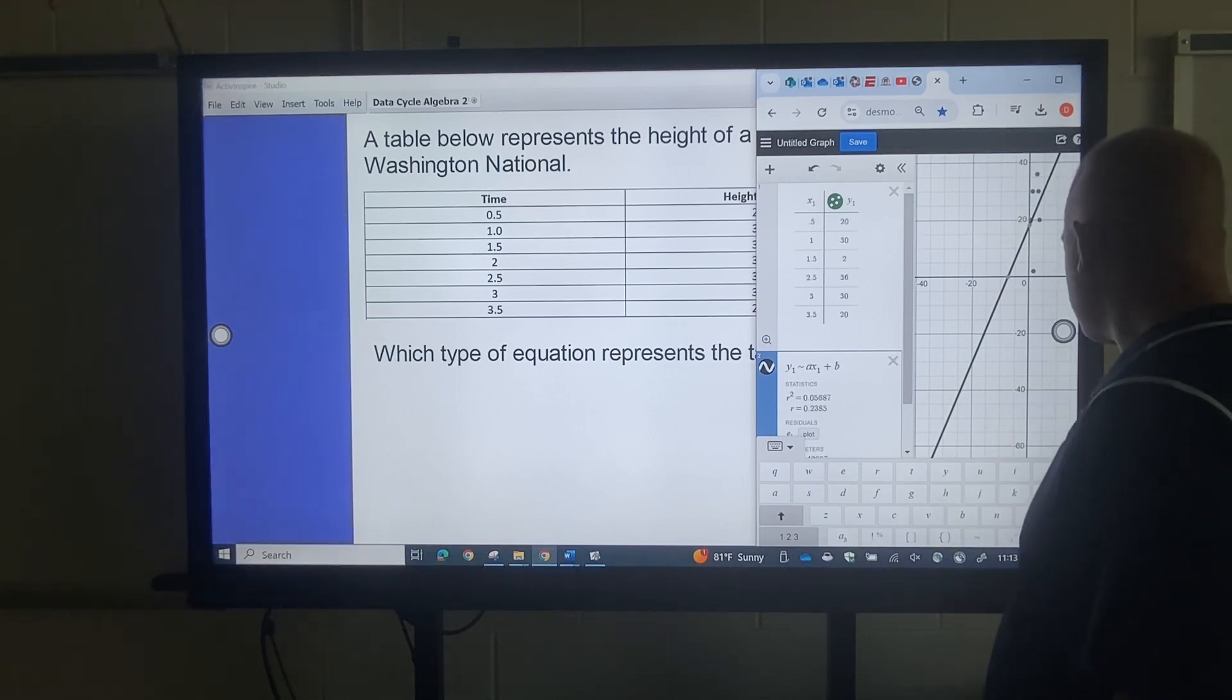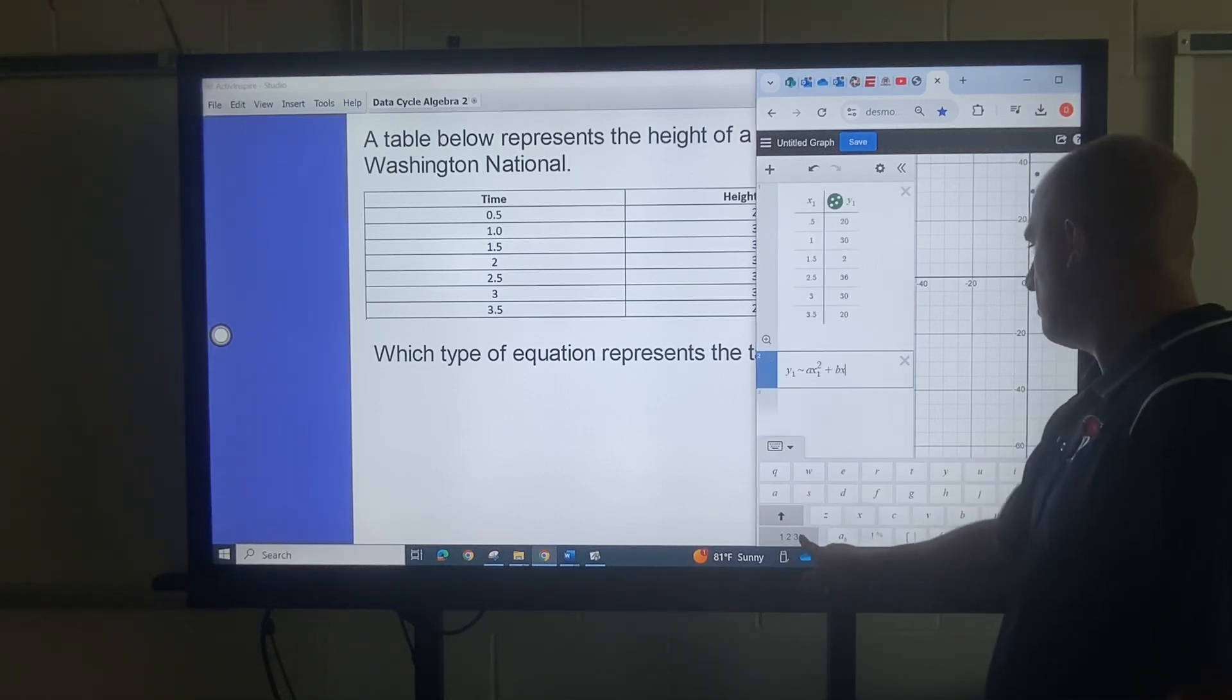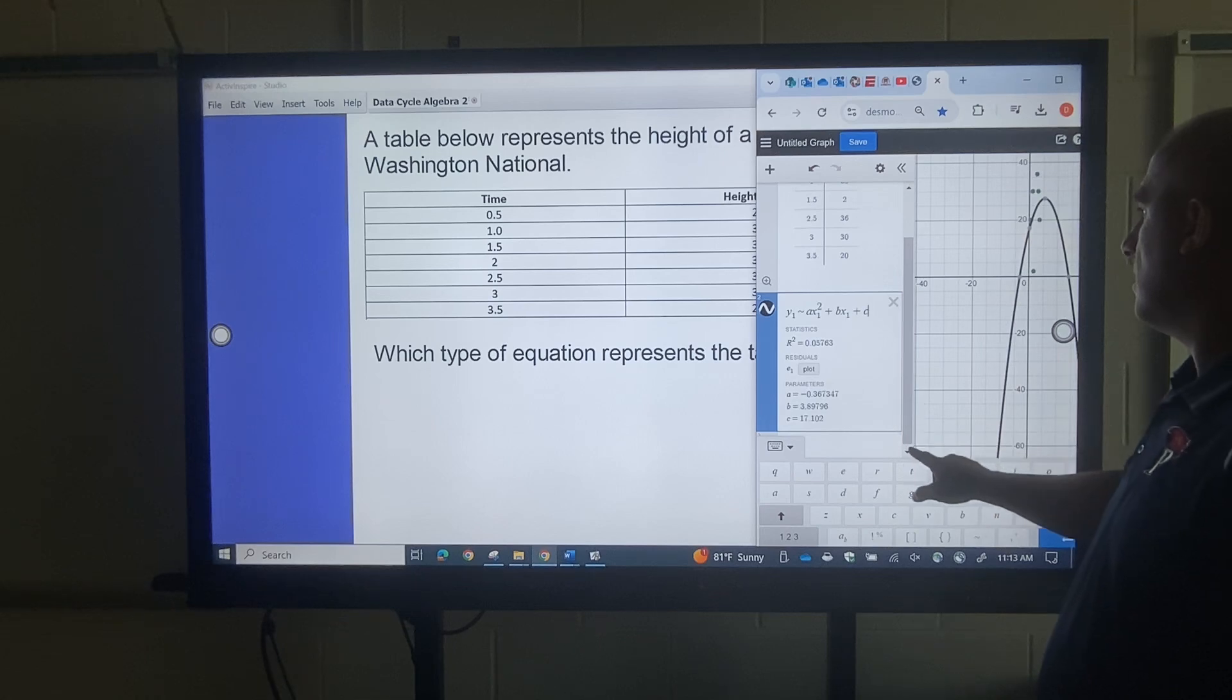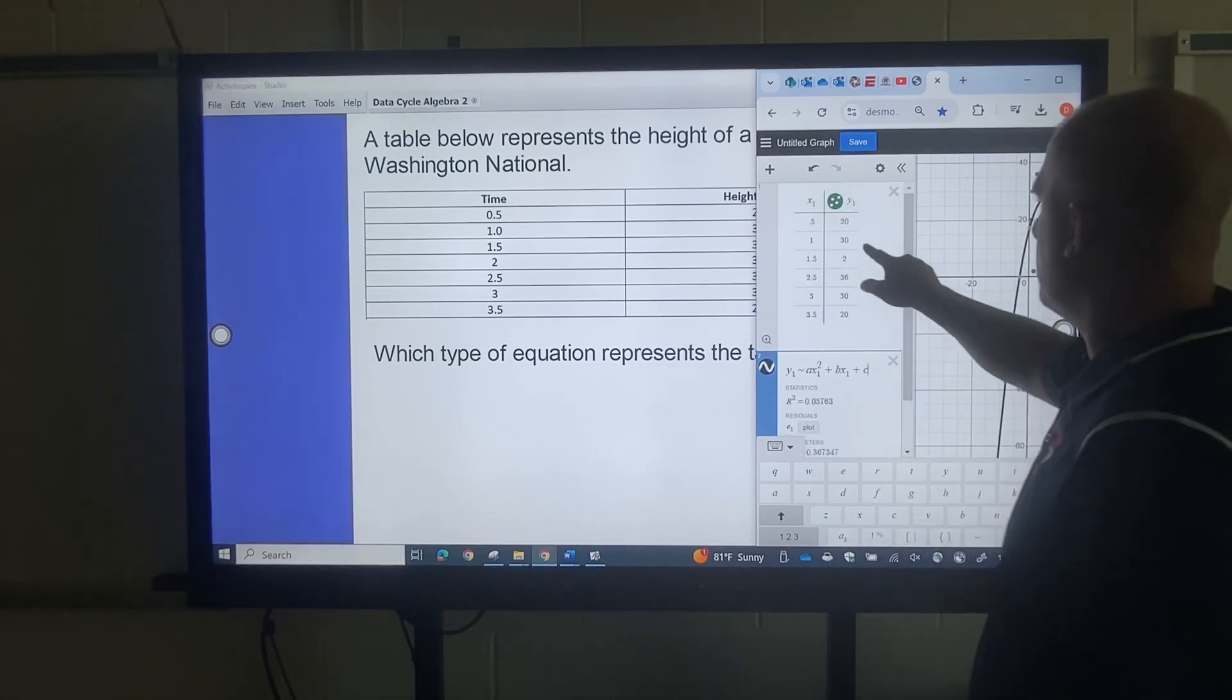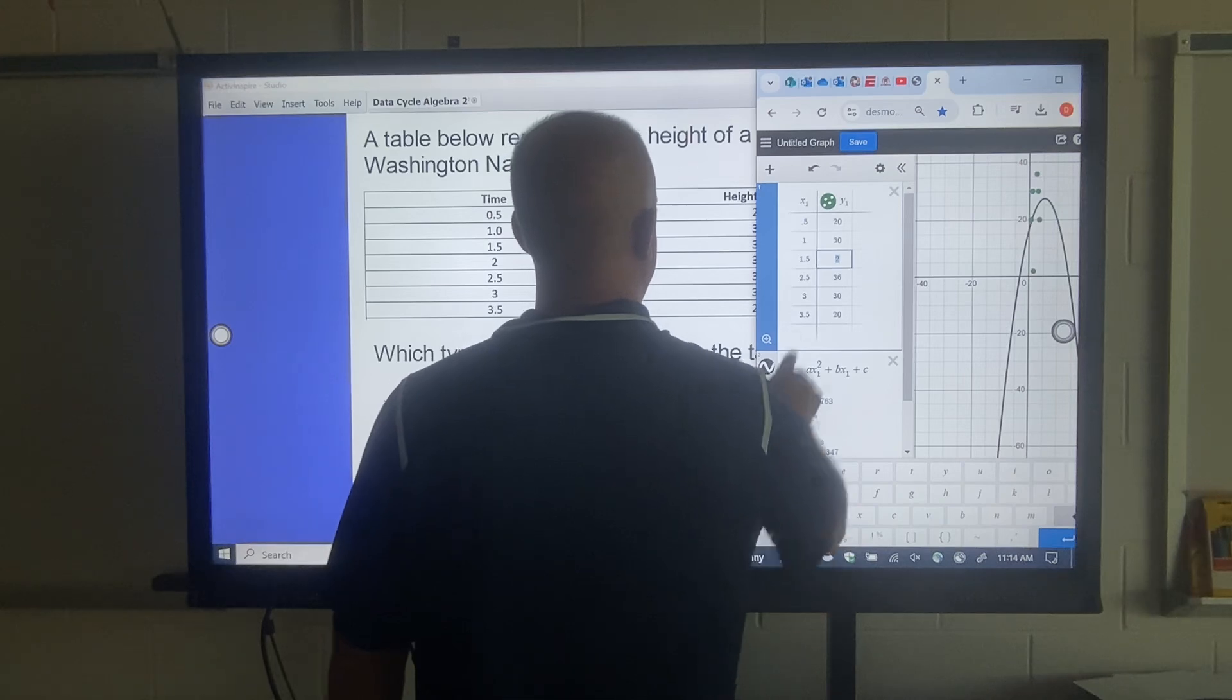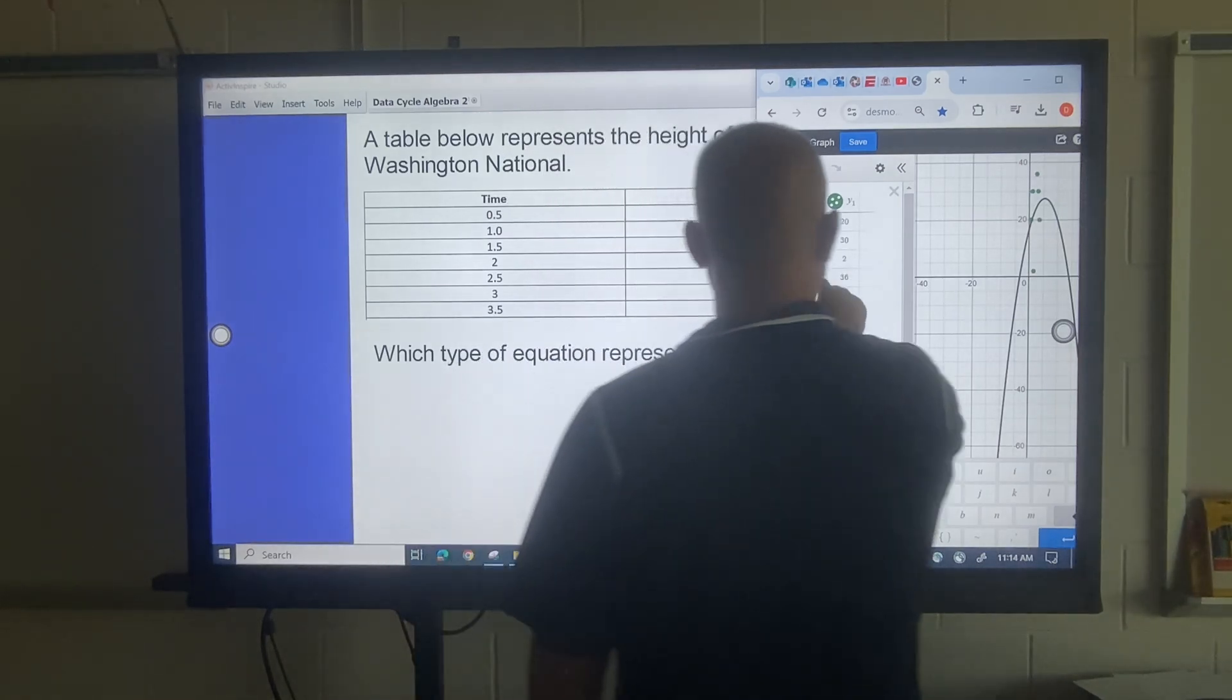So what I'm going to do is go ax1 squared plus bx1 plus c, the equation for a quadratic. Oh, whoops. I got the wrong number there. Hold on. That should be a, I skipped something here, didn't I? I skipped something.